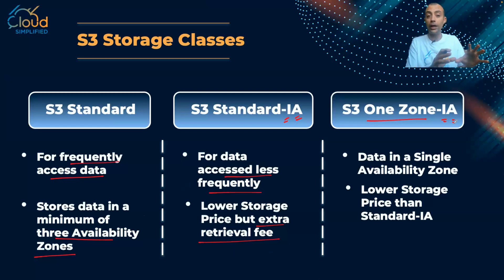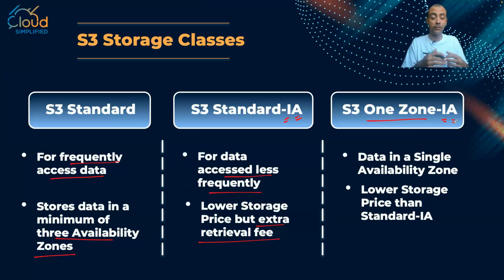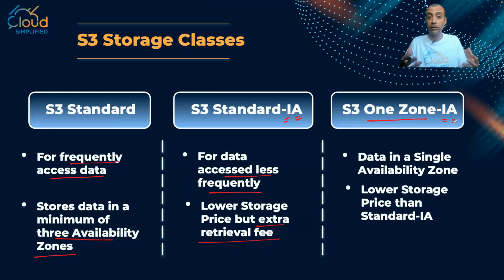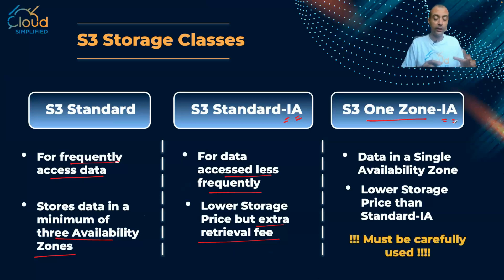One Zone-IA is suitable for data that you can regenerate. For example, if you have sales-generated reports and you lose them, you can regenerate them. Another option is picture thumbnails — if you lose them, you can simply regenerate the thumbnails from the original pictures. That's why this special storage class must be used very carefully.